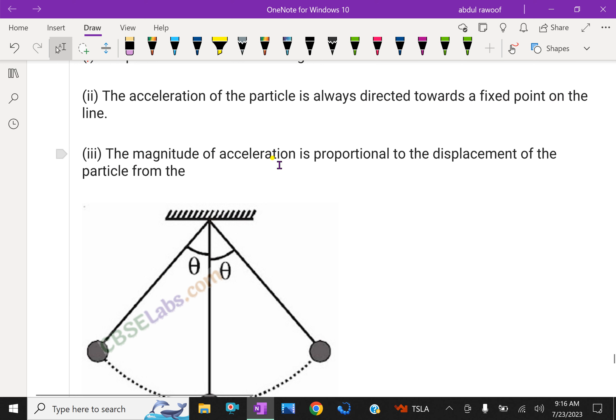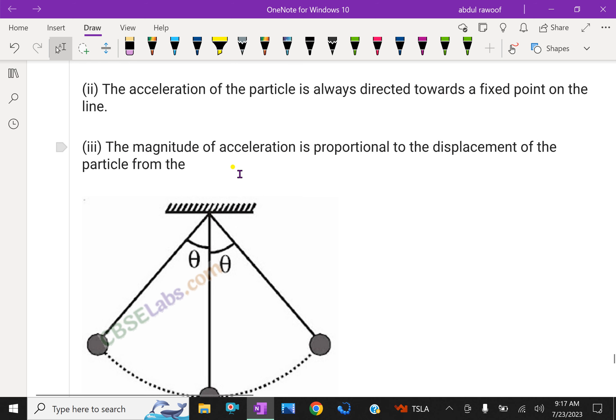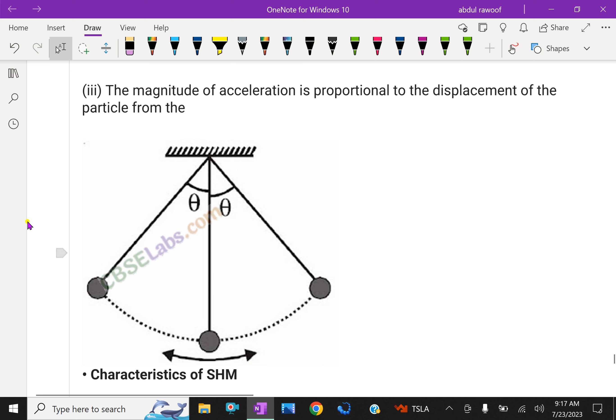The magnitude of acceleration is proportional to its displacement of the particle from the extreme position. From extreme to mean position, the acceleration is increasing.